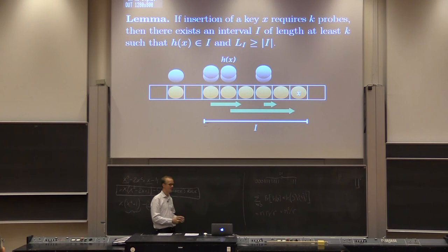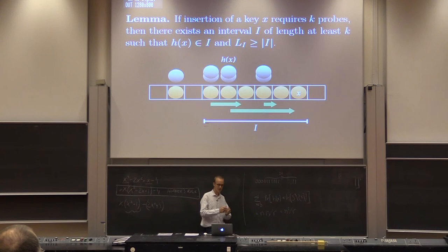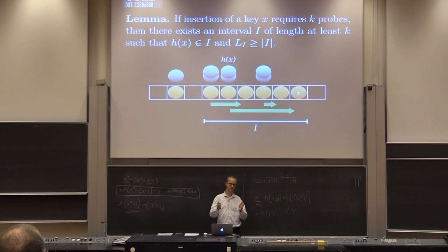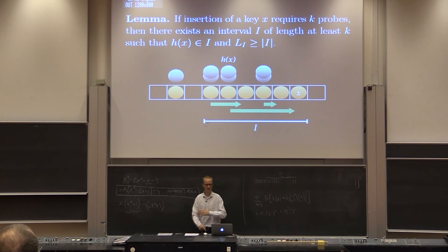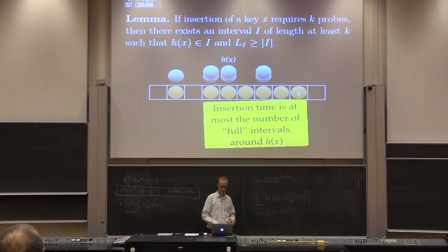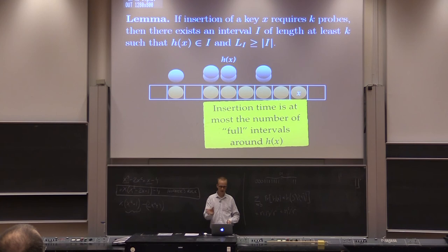The proof is relatively simple: each time you take a step forward, there's a set of items you have passed, all falling into some interval. That interval must be completely full, otherwise those items couldn't be there. Therefore there must be at least as many keys with hash values in the interval as the length of the interval. The insertion time is at most the number of full intervals — intervals where the number of hash values equals the length — that surround h(x). So we just need to analyze how many of these full intervals there are.